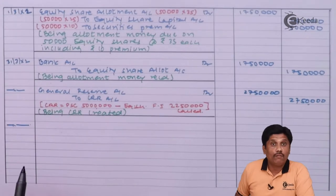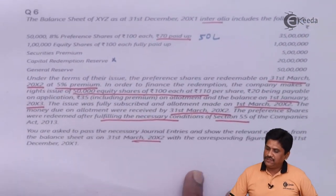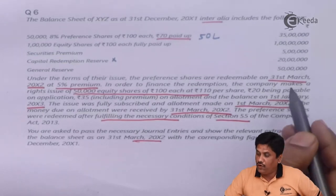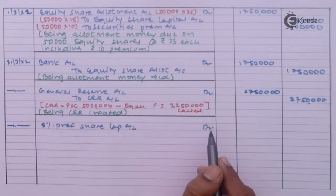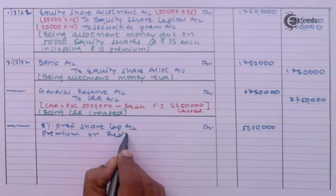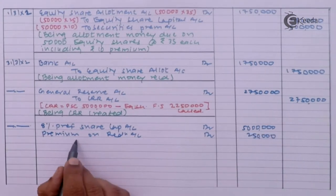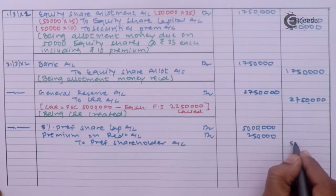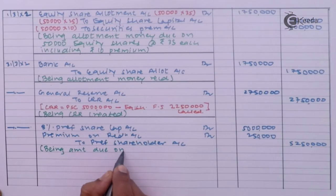Now I will go for the redemption entry — amount due on redemption. Preferences are redeemable at 5% premium. Entry on 31st March X2: 8% preference share capital account debit Rs 50 lakhs; premium on redemption account debit Rs 2.5 lakhs (5% of Rs 50 lakhs); to preference shareholder account Rs 52.5 lakhs.